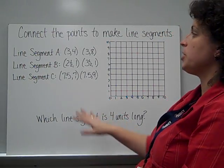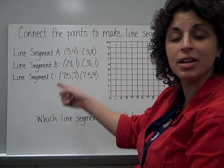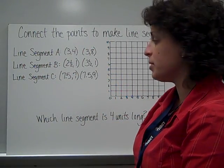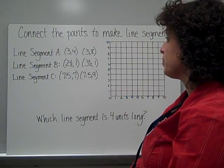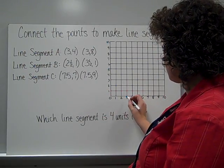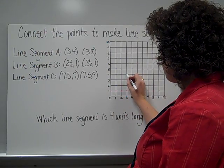On this one, we're going to plot these points and connect them to make line segments, and then answer a question about it. For our first line segment, we have 3, 4. So 3, 4.